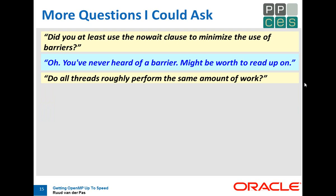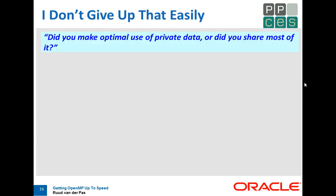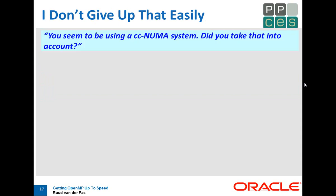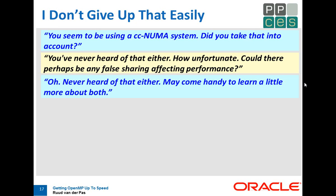Do all the threads perform the same amount of work, roughly? You don't know — you think it's okay. Well, I hope you're right. Did you maximize the use of private data, or did you share most of it? Oh, you just shared — it's easier. Sure. Looks like you're using a CC NUMA system. Did you take that into account? Never heard of that either. Maybe it was false sharing affecting performance. Never heard of that either. Maybe you should read a little bit more.